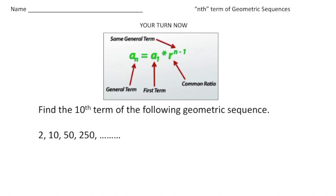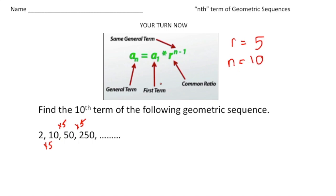Welcome back. Let's see how you did with this practice problem. Our sequence is 2, 10, 50, and 250. It's being multiplied by 5, because 2 times 5 is 10, 10 times 5 is 50, and 50 times 5 is 250. So our common ratio is going to be 5. We want to know what the 10th term is, so our n value is 10, and a₁ is the first term, which is 2.